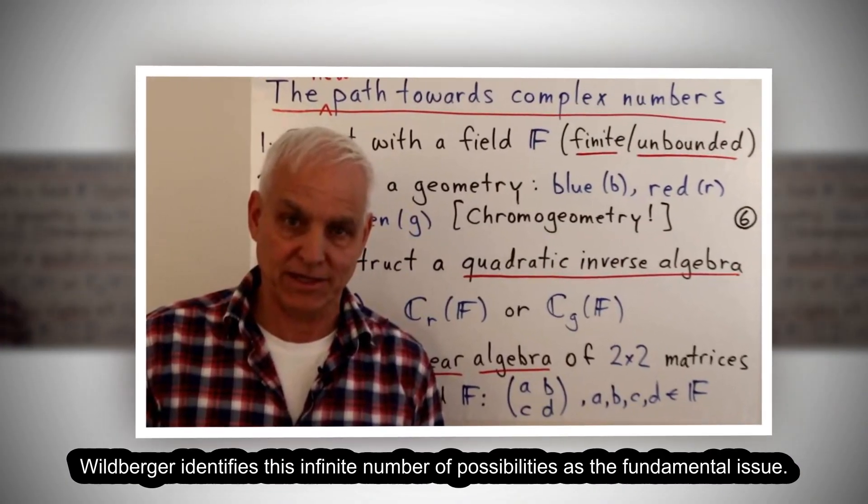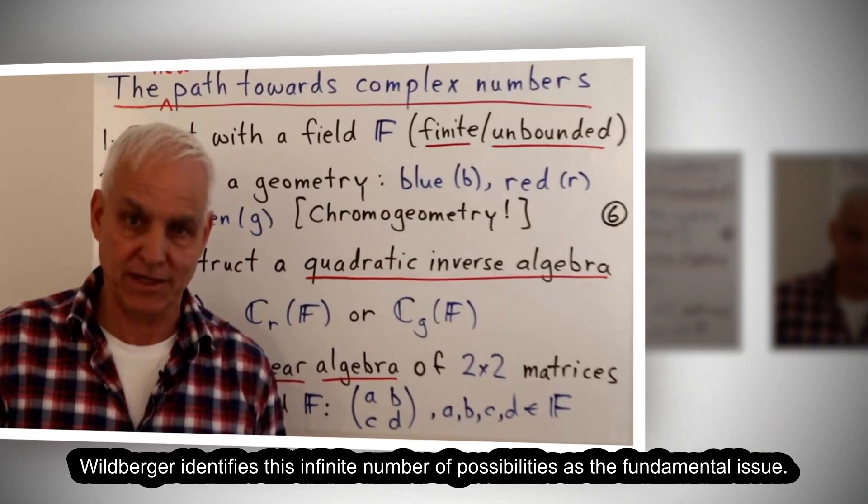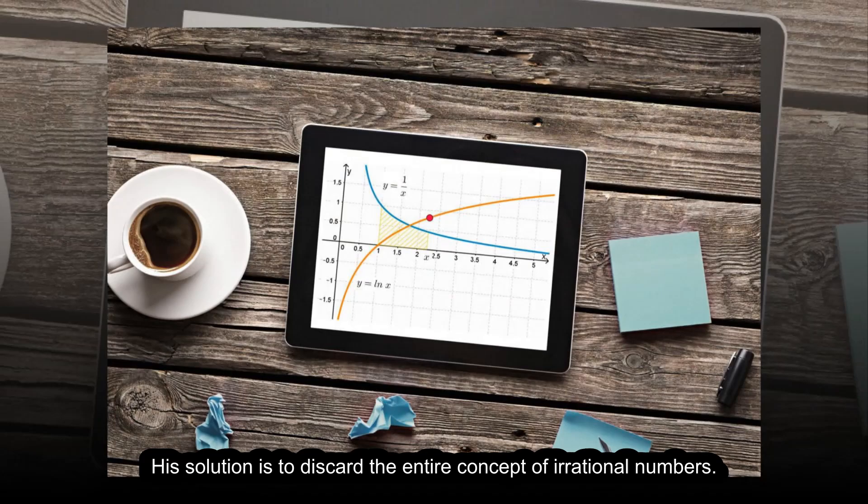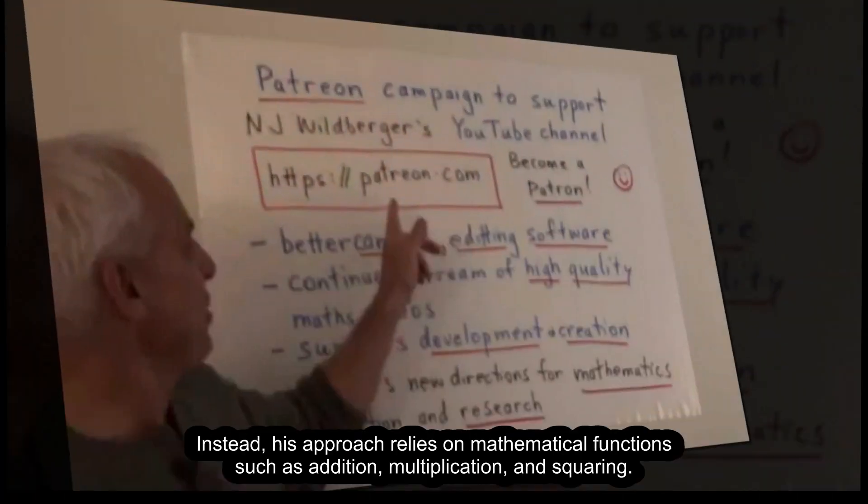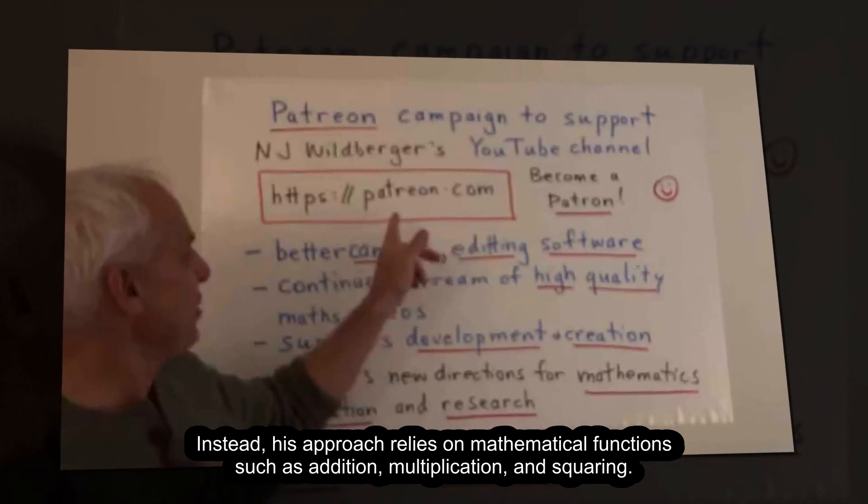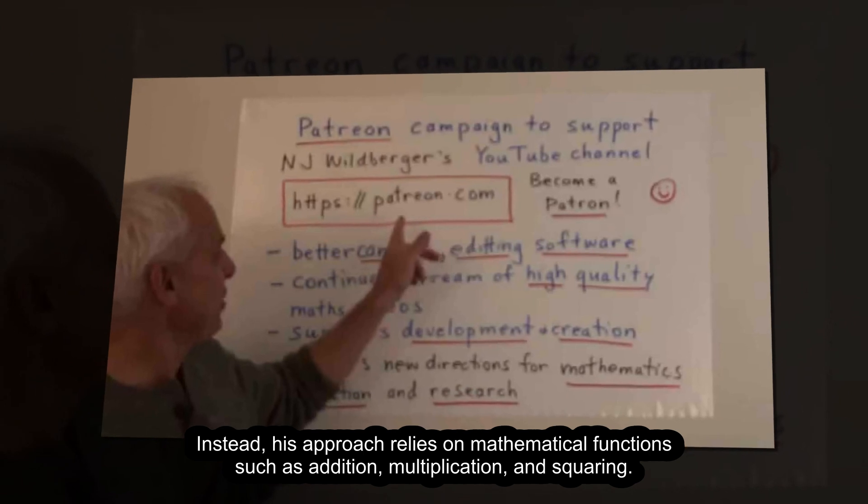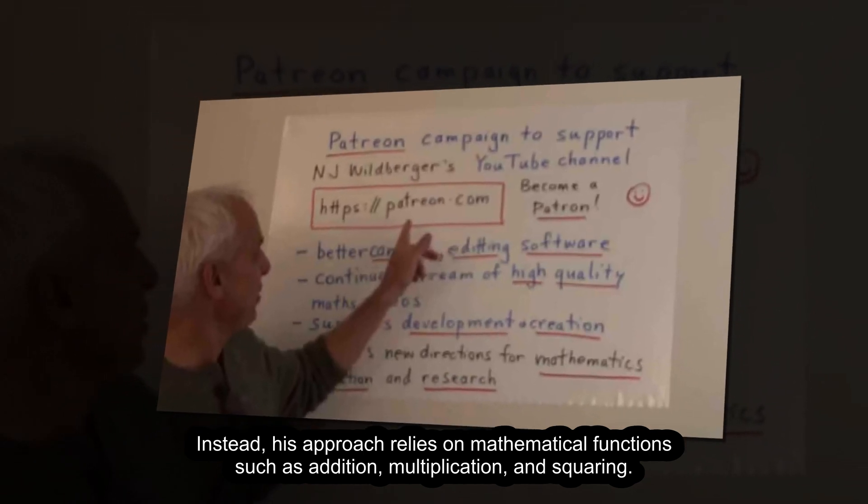Wildberger identifies this infinite number of possibilities as the fundamental issue. His solution is to discard the entire concept of irrational numbers. Instead, his approach relies on mathematical functions such as addition, multiplication, and squaring.